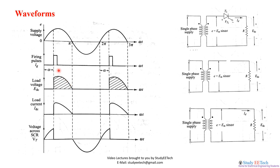There are three operating modes: zero to alpha, alpha to pi, and pi to 2pi.